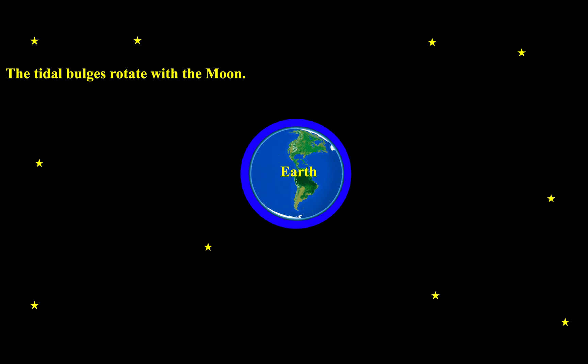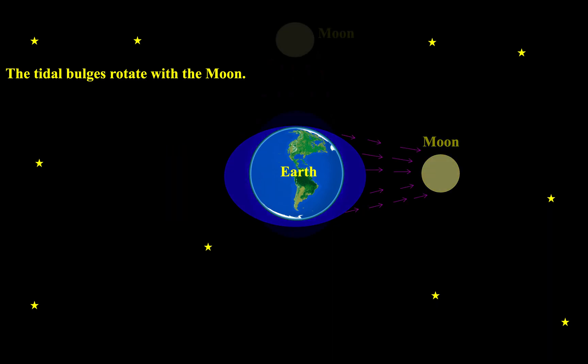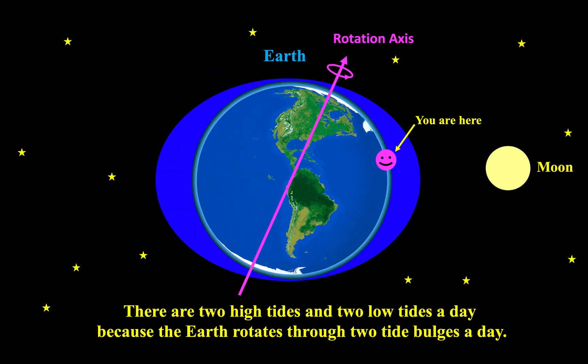When the Moon rotates around the Earth, the tidal bulges also rotate with it. We now know that high tides and low tides are caused by the Moon.